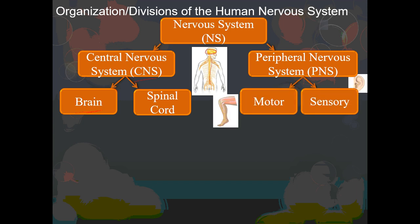We're going to divide the PNS further into what is referred to as the motor and the sensory systems. Motor information involves information going to your muscles that involve movement — so motor is associated with movement. In the case of the motor system, we have what are called motor neurons, which are the nerve cells carrying information from the central nervous system to the periphery.